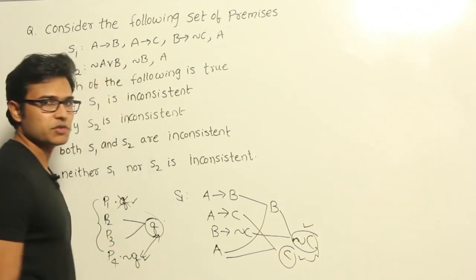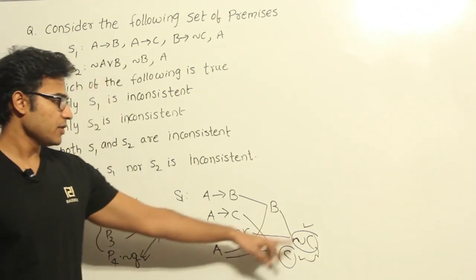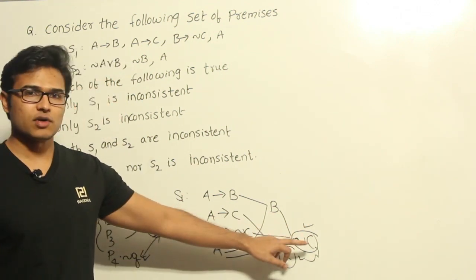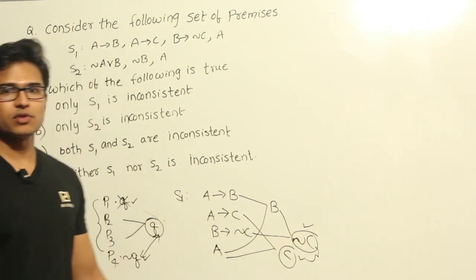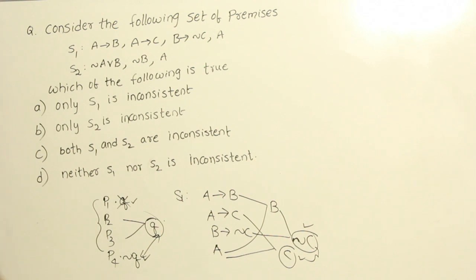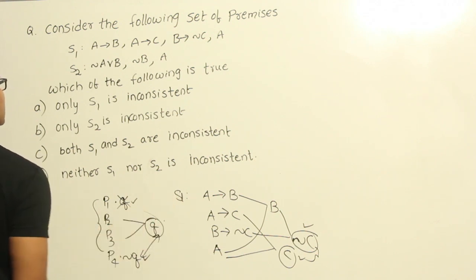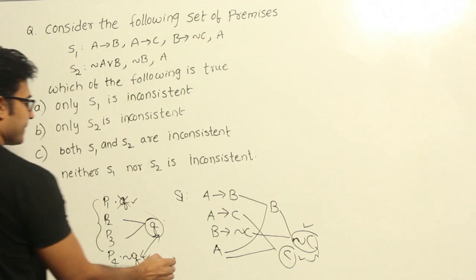Now see this, we are getting that negation C is true as well as C is true. So this cannot be possible, right? Why? Only one of them can be true. If C is true this is going to be false. If this is true this is going to be false. It cannot be the case that both C and negation C are true. Therefore S1 is inconsistent.